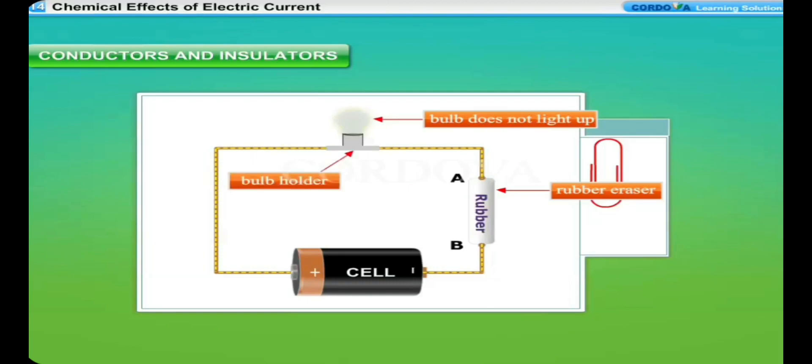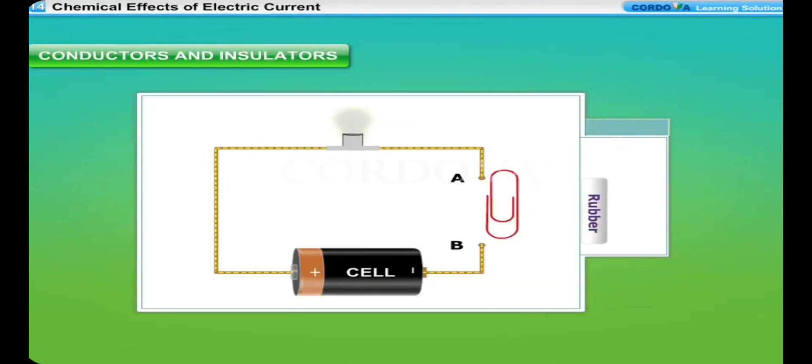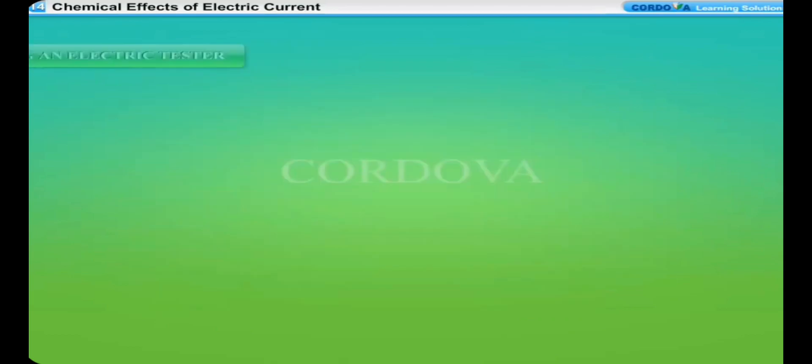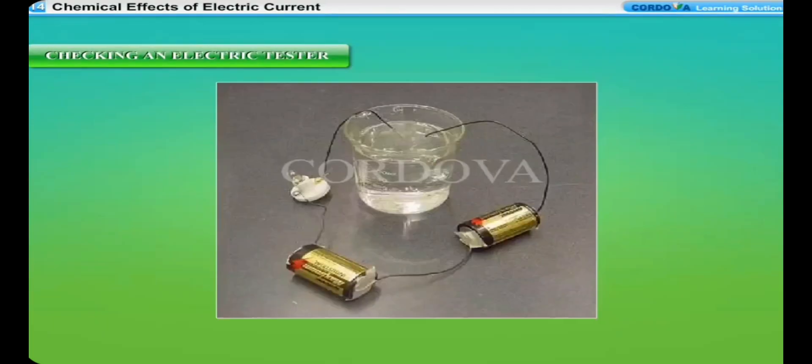In class 6, we made an electric tester to test whether a particular material is a conductor or an insulator. An electric tester consists of an electric cell, a torch bulb fitted in a holder and some connecting copper wires. Checking an electric tester: You need to check the electric tester before you conduct any activity or experiment. Join the three ends of the tester together for a moment. This completes the circuit of the tester and the bulb glows.